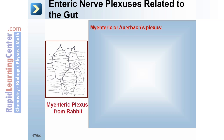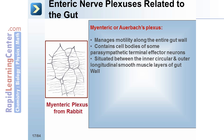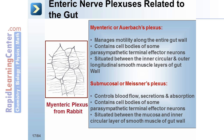Now let's take a look at the enteric nerve plexuses related to the gut. The myenteric, or Auerbach's plexus, manages motility along the entire gut wall. It contains cell bodies of some parasympathetic terminal effector neurons and is situated between the inner circular and outer longitudinal smooth muscle layers of the gut wall. There is also the submucosal, or Meissner's plexus. It controls blood flow, secretions, and absorption. It contains cell bodies of some parasympathetic terminal effector neurons and is situated between the mucosa and inner circular layer of smooth muscle of the gut wall.